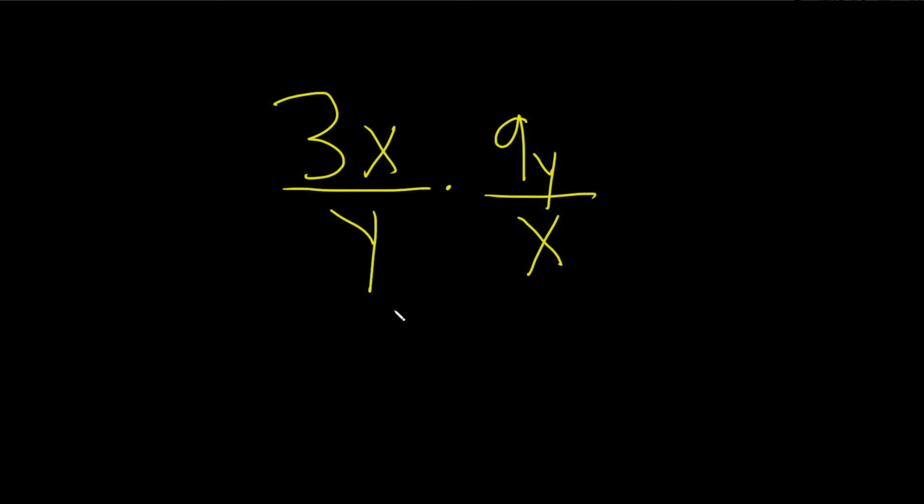In this problem, we have to multiply these fractions, and we have two variables. We have x and y. So the first thing to try to do is to try to simplify.